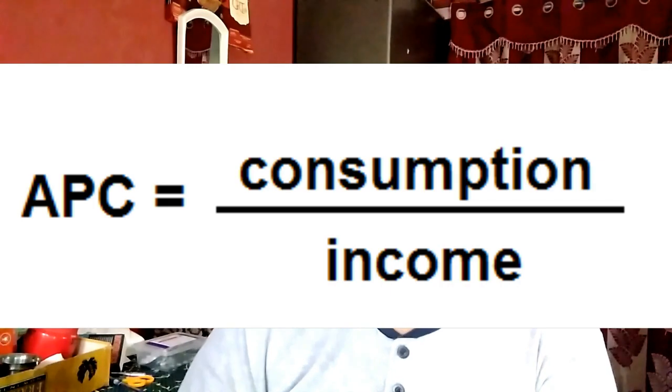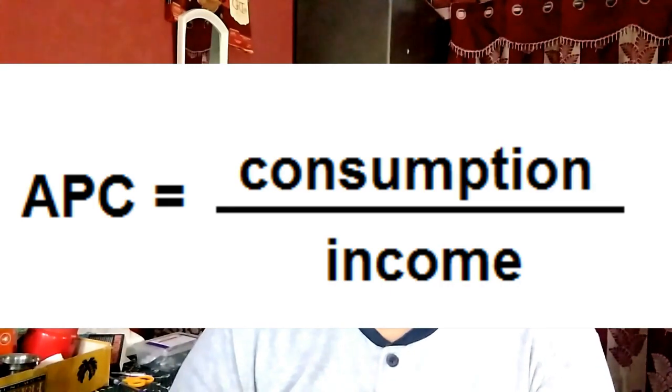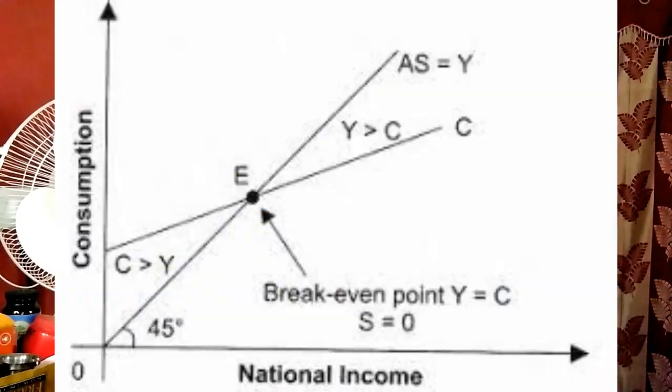What is the value of APC at the break-even point? APC refers to the ratio of consumption expenditure to the corresponding level of income. At the break-even point, consumption equals national income, so APC is equal to 1.